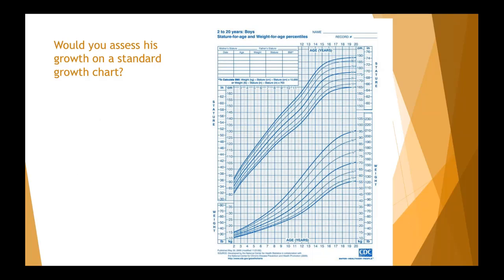His current height is 85 centimeters and his weight is 12 kilos. The question is whether to assess his growth on a standard growth chart. If you were to plot his weight and stature on the standard CDC chart published in 2000, it would appear he is undernourished — at least nearly three standard deviations below the lowest percentile in terms of stature.